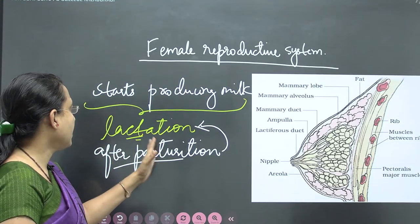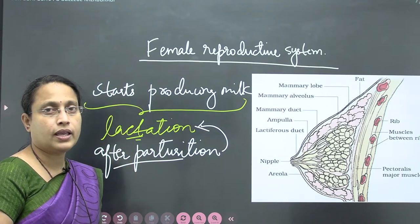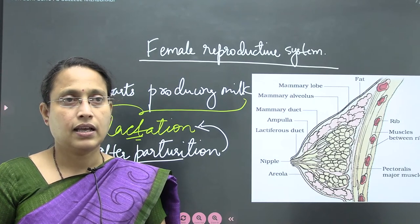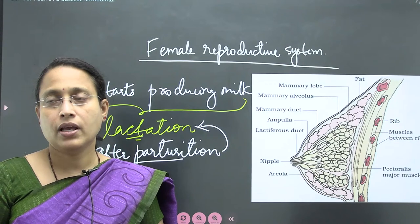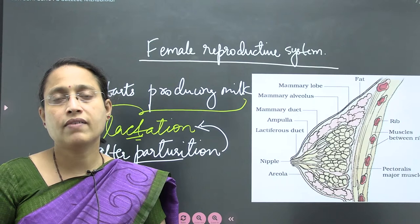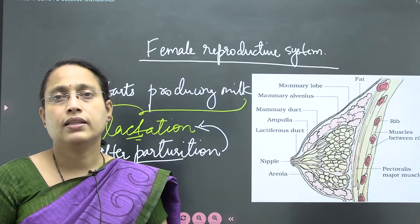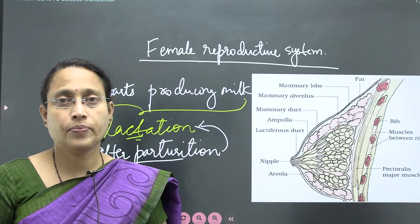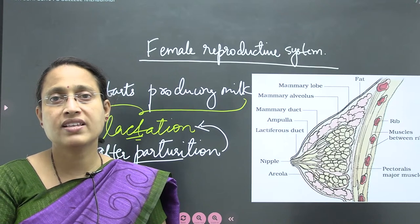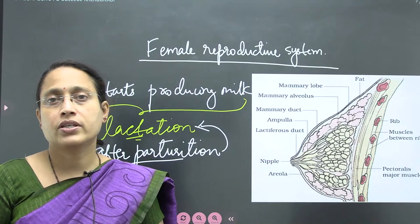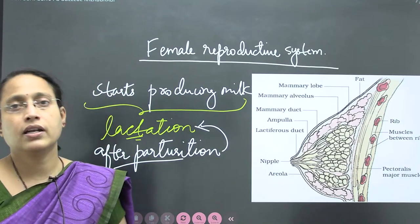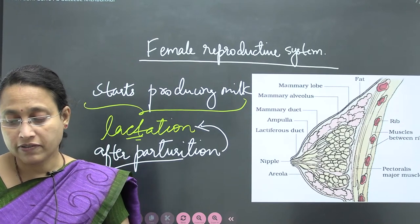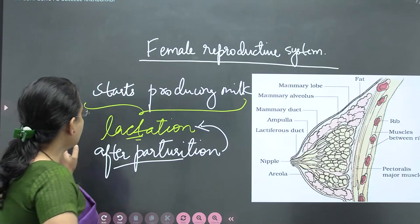After parturition, lactation begins and the glands start producing milk. Initially, the milk which is produced is called colostrum — this is a kind of immature milk. After a few days, once the colostrum phase is over, the milk produced is called mature milk. The composition and nutritional value of milk differs between these early and later stages.